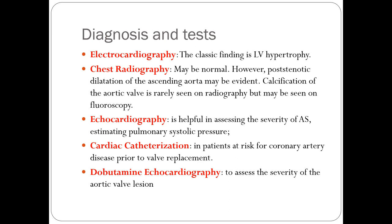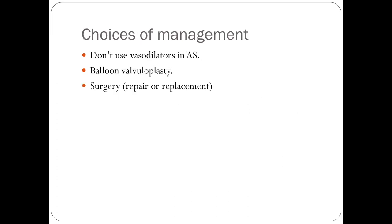Dobutamine echocardiography is a stress test used when the ejection fraction is so low that the contractility of the heart cannot be properly assessed to determine the true severity of the aortic valve lesion. Dobutamine increases myocardial contractility, allowing measurement of the severity of valve stenosis. Regarding choices of management of aortic stenosis, medications should be used and vasodilators avoided whenever possible.